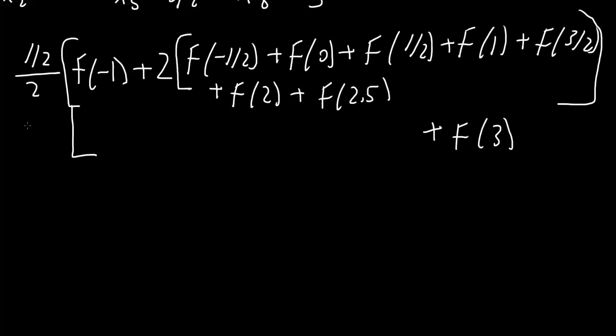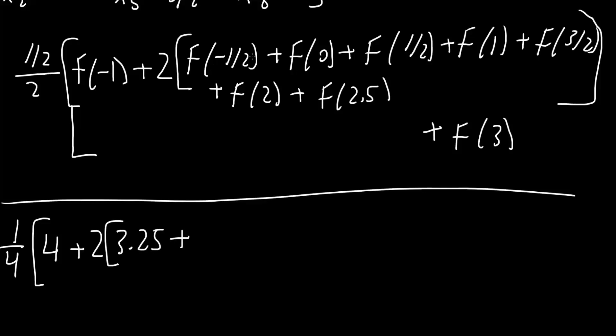And so this is what I mean: 1 half divided by 2 would be 1 fourth, right? And now this is where I swap. So f parentheses negative 1 would correspond to 4, plus 2 bracket or parentheses. This right here would become 3.25, plus f 0 would be 3, plus f 1 half would be 3.25, plus f 1 would be 4, plus f 3 halves would be 5.25, plus f 2 would be 7.